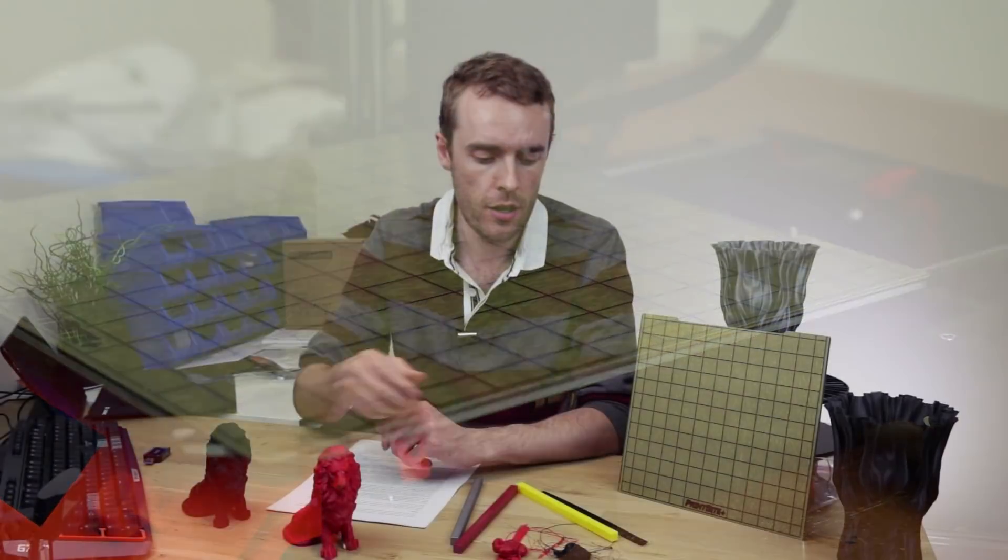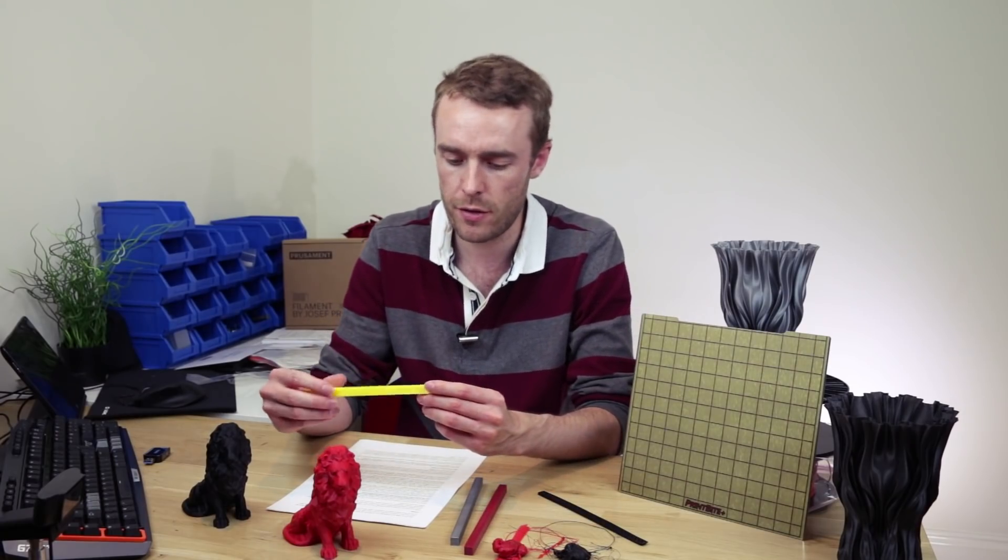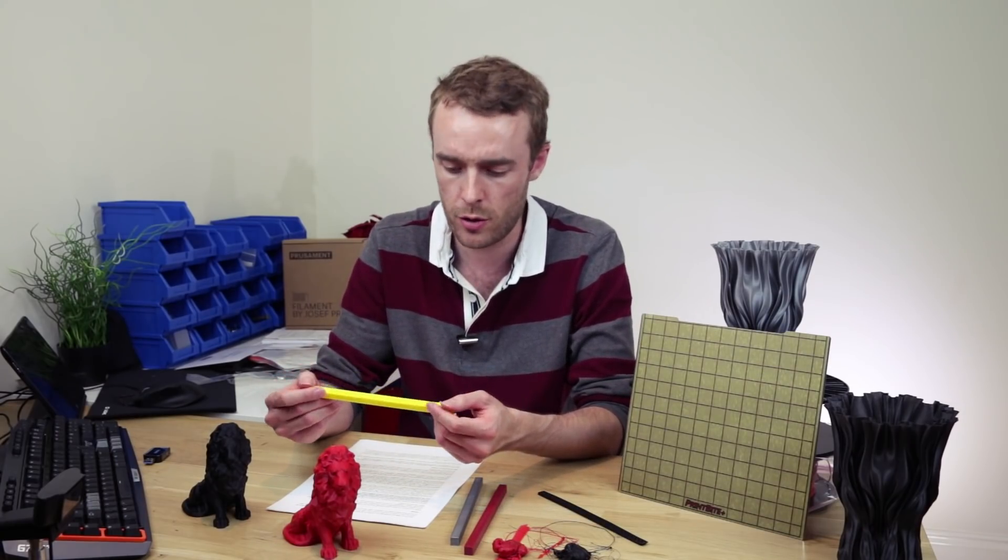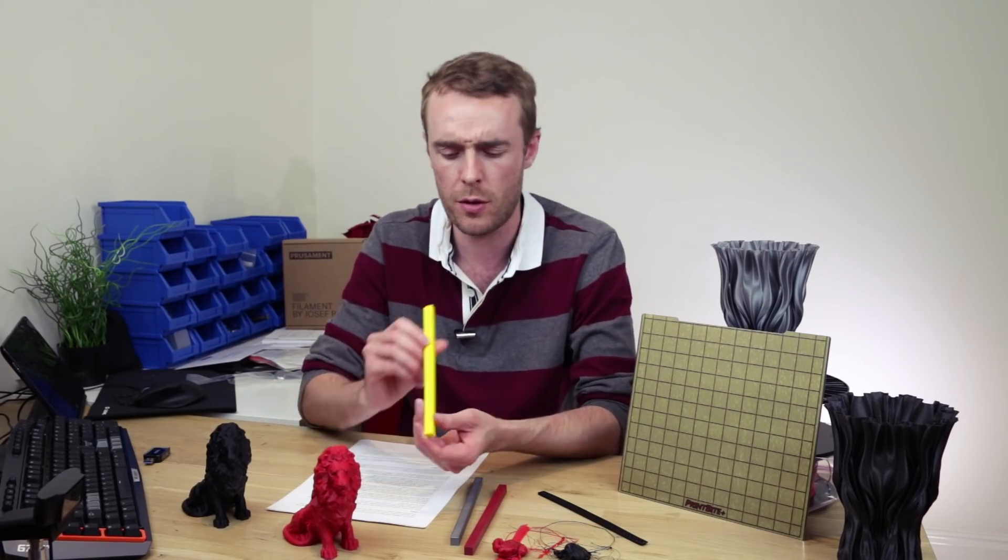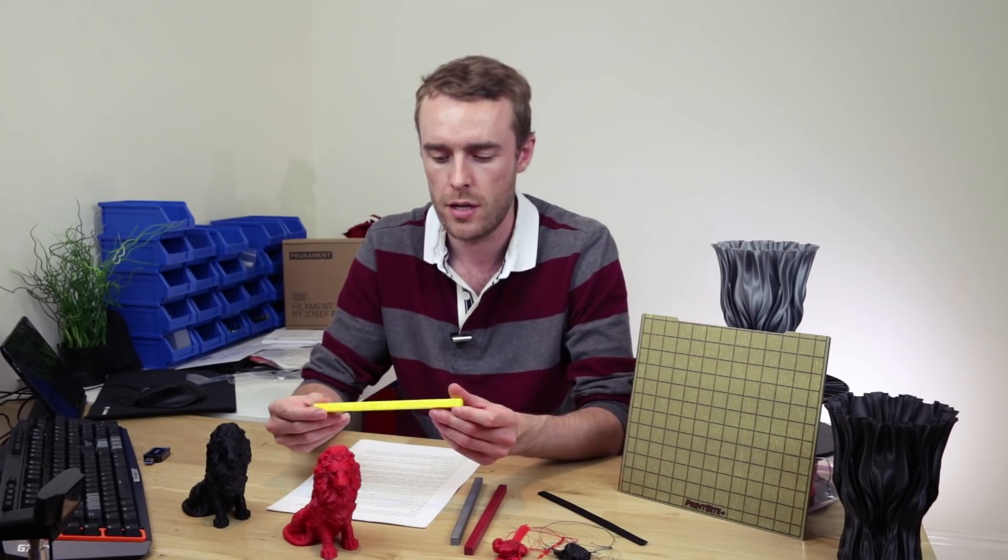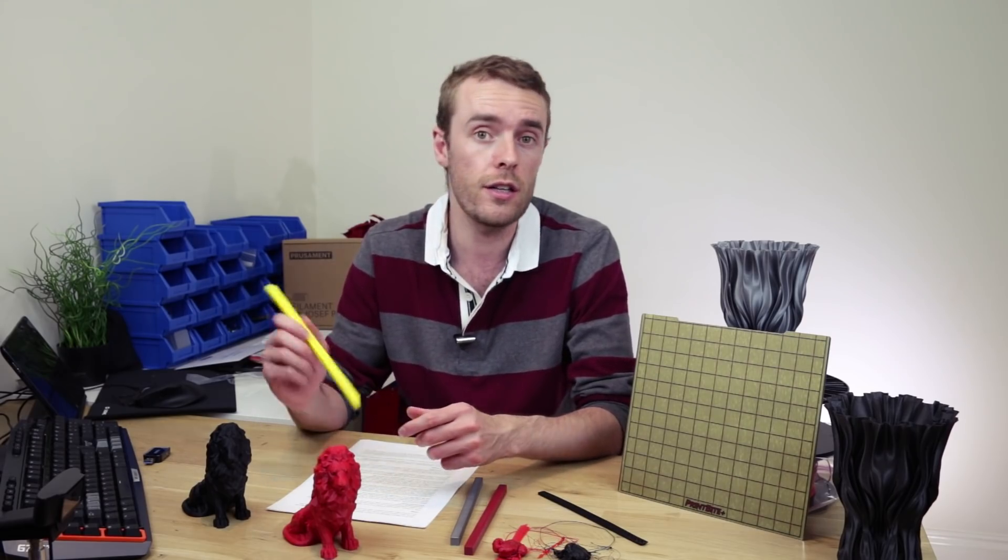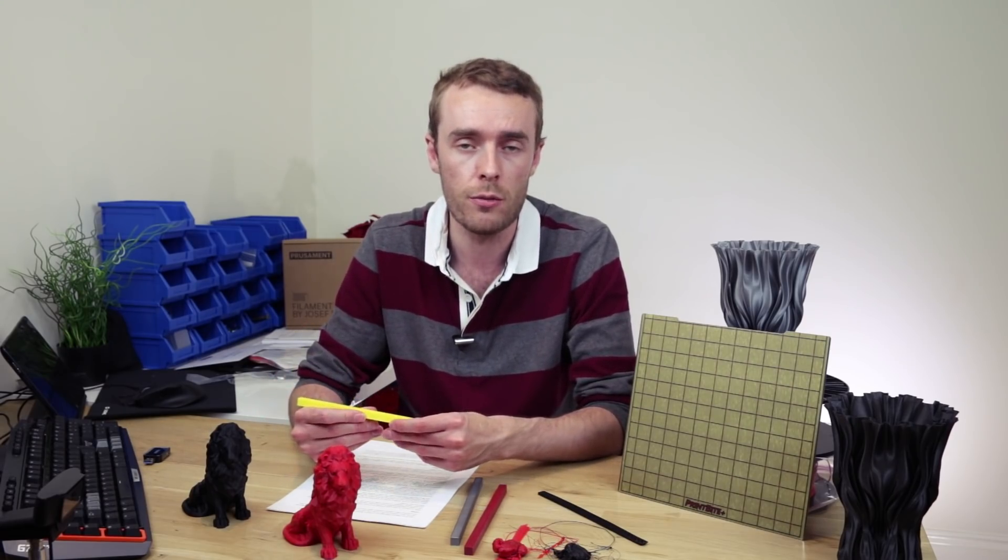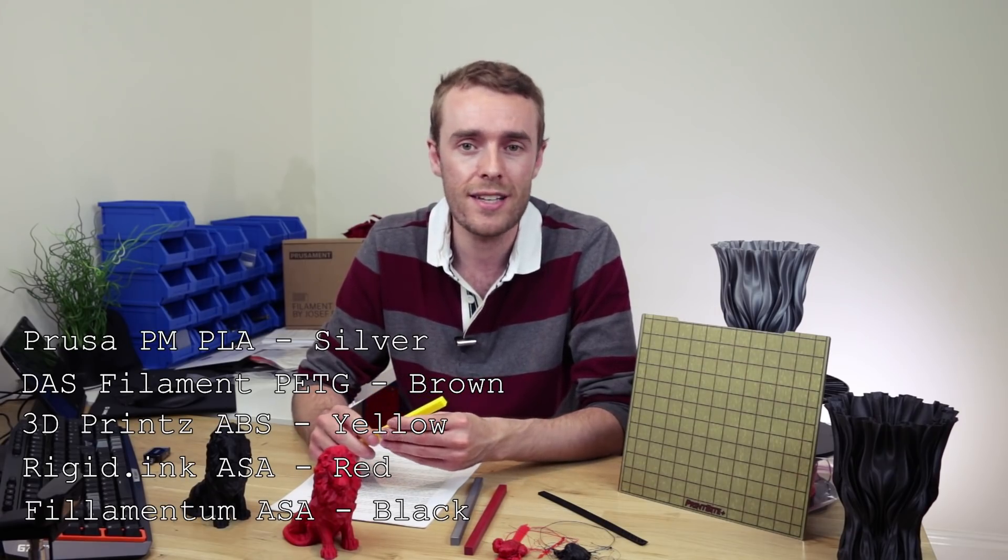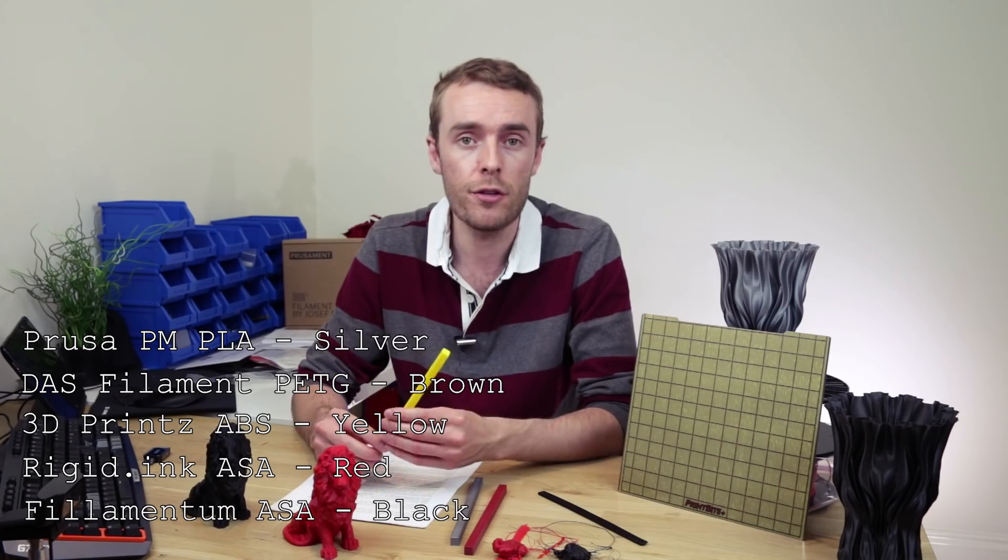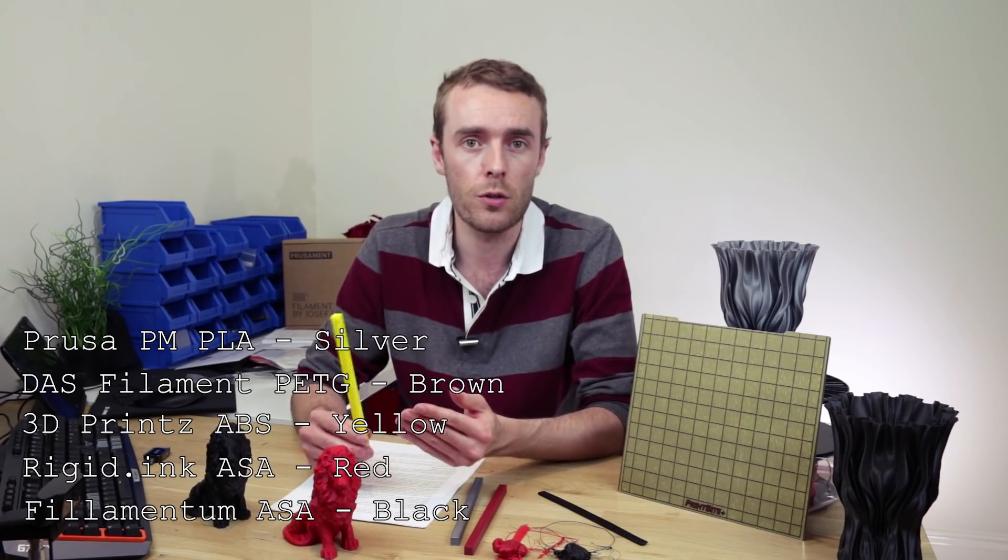For the test print file, I found this warp test file on Thingiverse, which is basically just a long cuboid. It does have some little notches in it, just presumably to help you gauge by looking down at how much it's warped, but it's not very complicated. I'll leave a link for the file in the description below. The materials I'm going to be testing are PLA, PETG, ABS and ASA. The reason for those materials is that that's what I have.